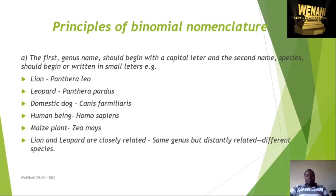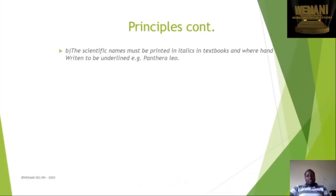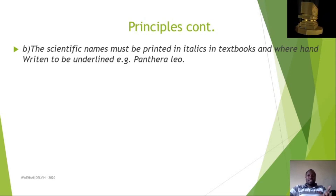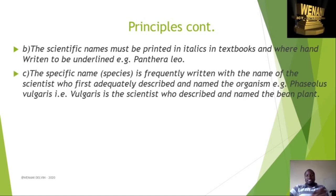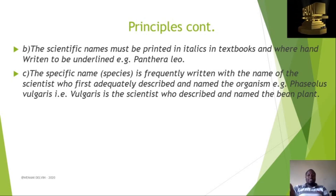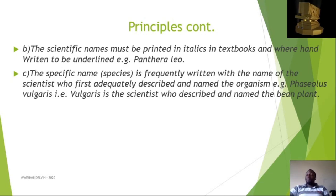When you look at a lion and a leopard, they tend to be closely related in terms of their genus — both are Panthera — but they have different species, so they are different. Principle two — the scientific name must be printed in italics in textbooks, and if handwritten, it must be underlined. For example, Panthera leo is printed in italics. The species name is frequently written with the name of the scientist who first adequately described the organism, such as Phaseolus vulgaris.